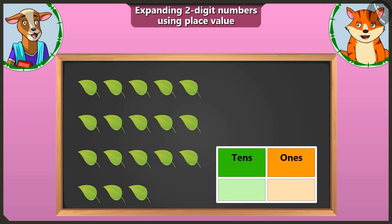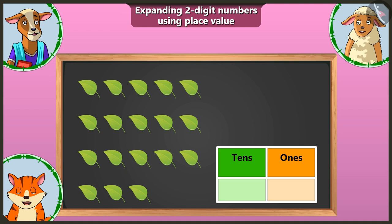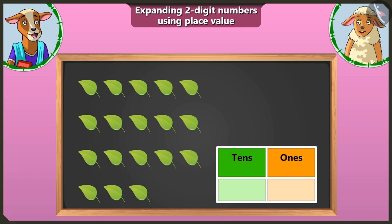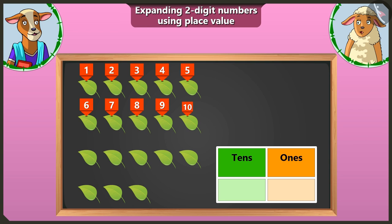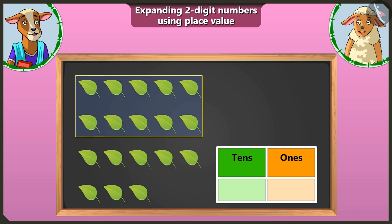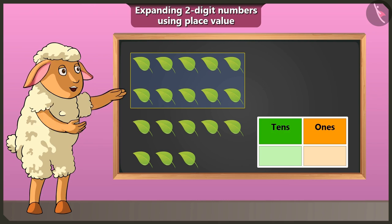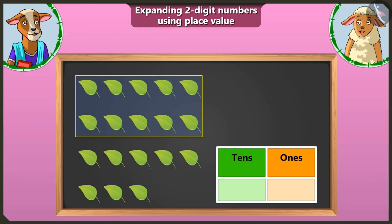Now look, there are some leaves here. Who will make their groups and write it? Alright, both of you do it one by one. First I will make a group of ten leaves, counting one through ten. I have made a group of ten like this. Now there is one group of tens here, so we will write one in the tens box.